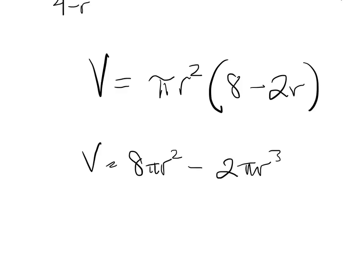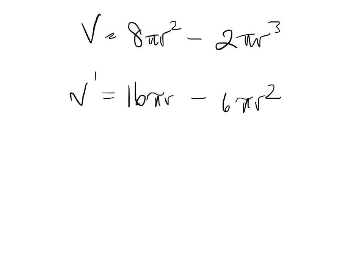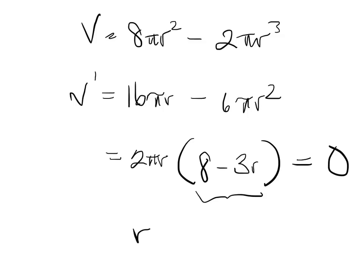Okay. 16πr minus 6πr². That's the same as 2πr times 8 minus 3r. If we're setting that equal to 0, this tells us r equals 8 over 3.